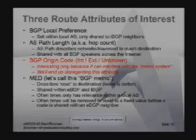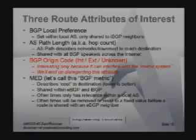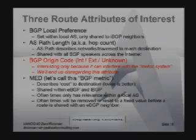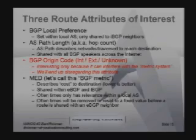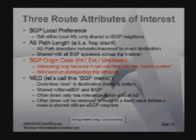The origin code is interesting only because it actually interferes with what we call the metric system — we're actually going to end up disregarding the attribute, but it needs to be noted that it's inspected before the metrics. BGP origin has three possible values: internal, external, or unknown. And then the MED — MED describes what's called the cost to the destination. It can be shared with any BGP and IBGP, but oftentimes it really only has relevance within the local AS. Different ASNs will use different scales to create MEDs. Some ISPs may use fiber kilometers between hops, some may use bandwidth-based values, some may not use it at all. Typically ISPs may not even share them with you, or they'll reset them all to zeros before handing off to the customer.